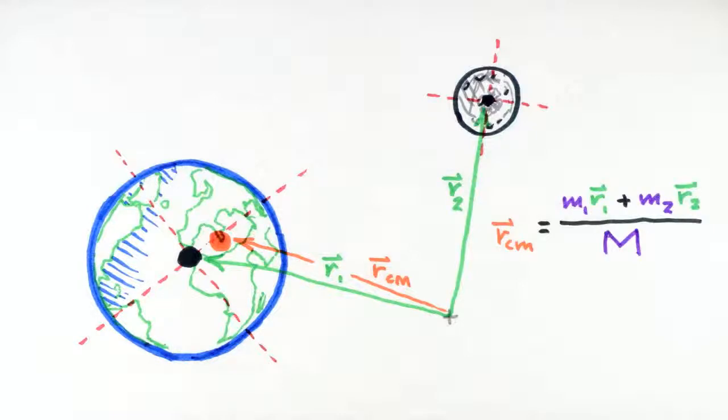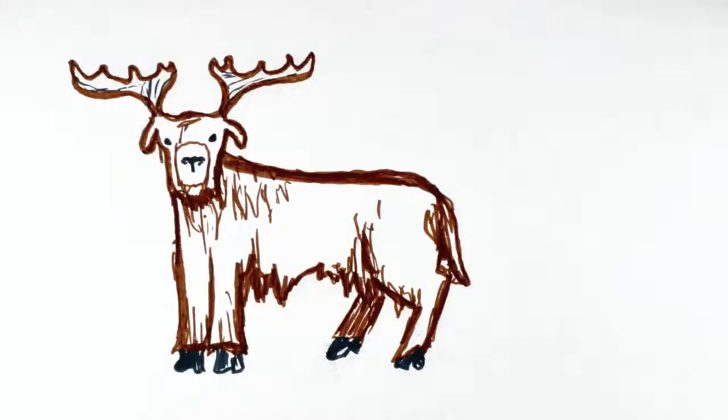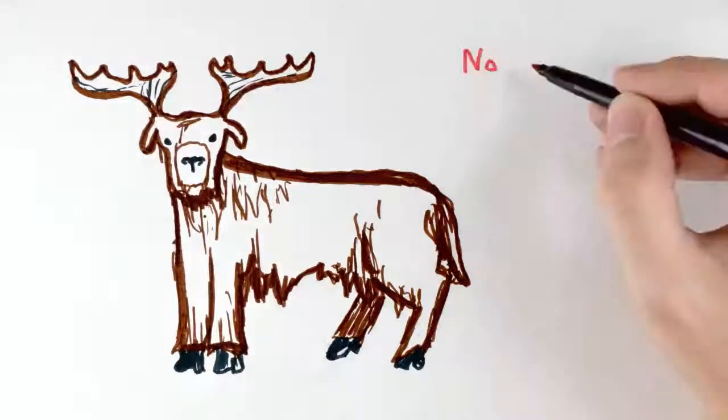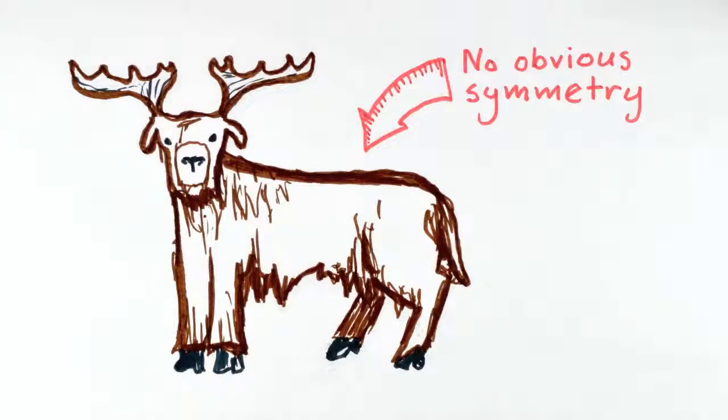One final point to make before we end this lecture. Even in the case where we have a system that is made up of continuous objects with no obvious symmetry, we can still find the center of mass by generalizing this procedure.